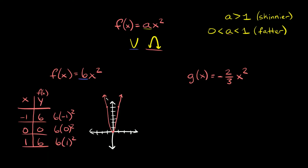A couple of things you want to identify on any parabola are the vertex and axis of symmetry. The vertex is always just the lowest or highest point on your parabola. For parabolas in this form, your vertex is always going to be at the origin — at 0, 0. The axis of symmetry is a vertical line that splits your parabola in half and always runs through the vertex. In this case, it runs over the y-axis, which is at x = 0.